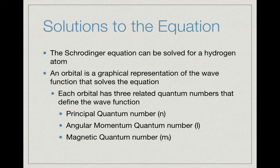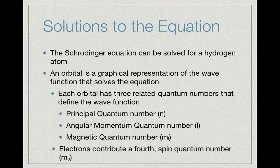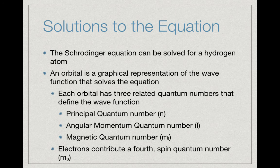There is a fourth quantum number that relates more towards the electrons, called the spin quantum number, given the label m sub s.